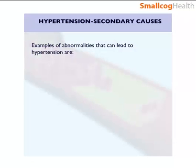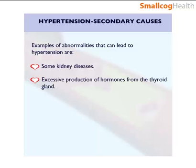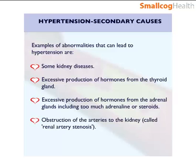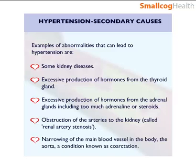Examples of abnormalities that can lead to hypertension include some kidney diseases; excessive production of hormones from the thyroid gland; excessive production of hormones from the adrenal glands, including too much adrenaline or steroids; obstruction of the arteries to the kidney, called renal artery stenosis; and narrowing of the main blood vessel in the body, the aorta — a condition known as coarctation of the aorta.